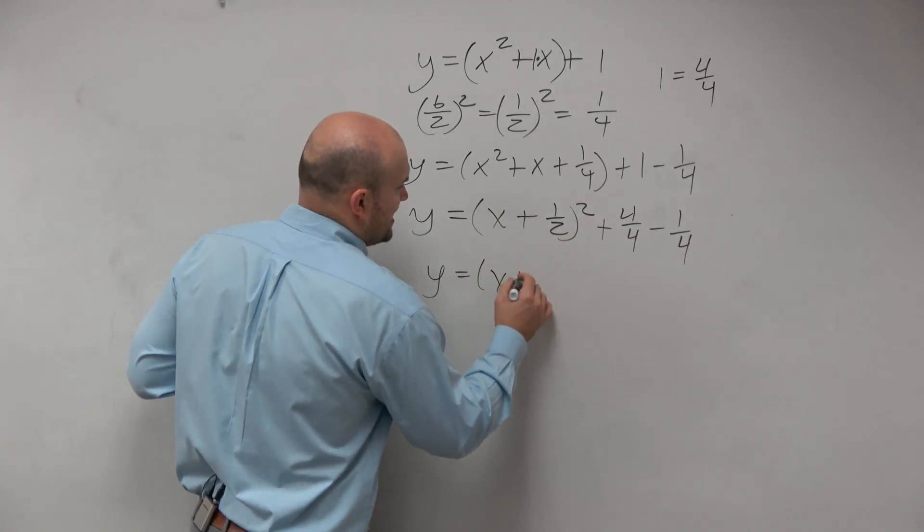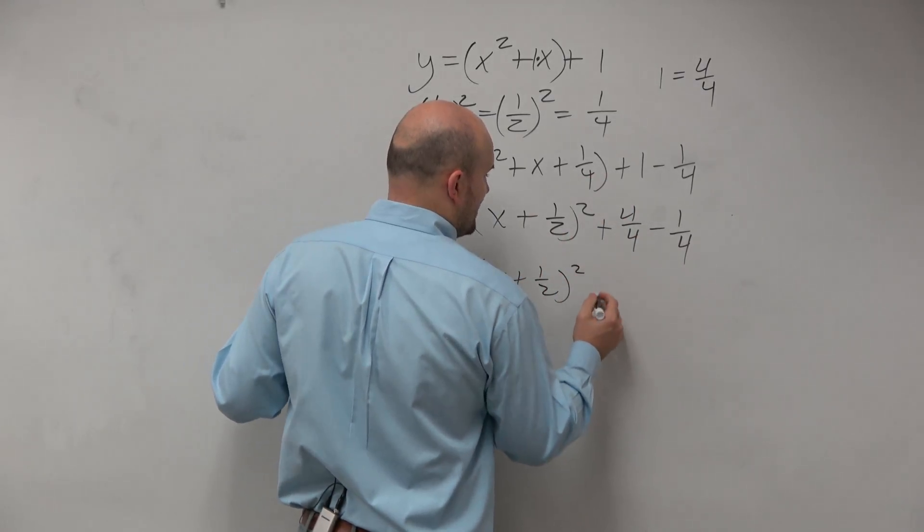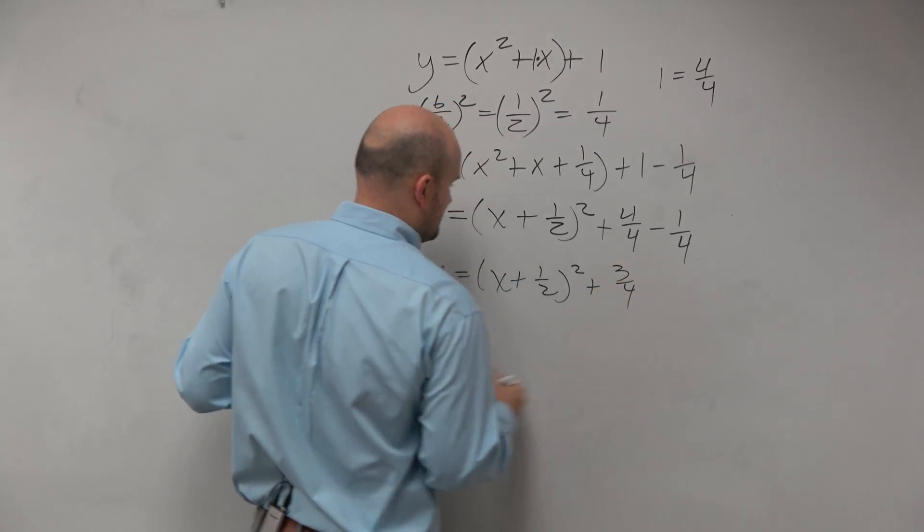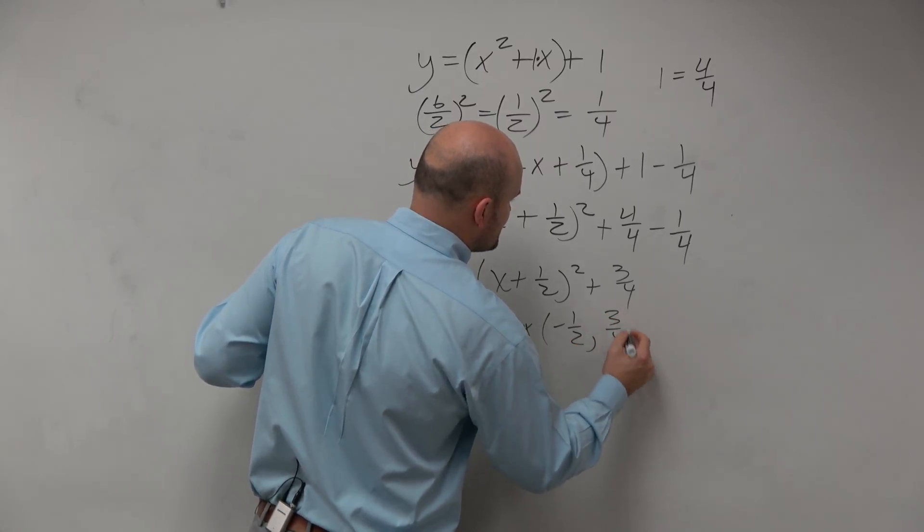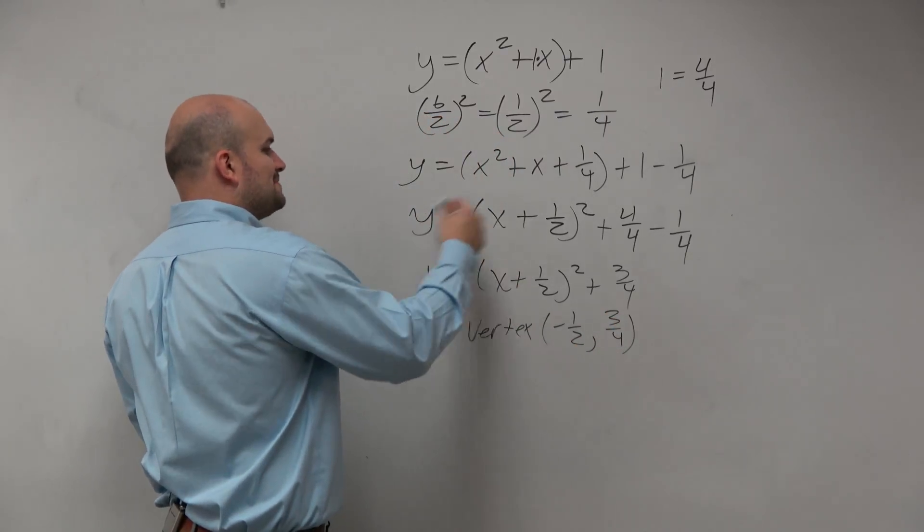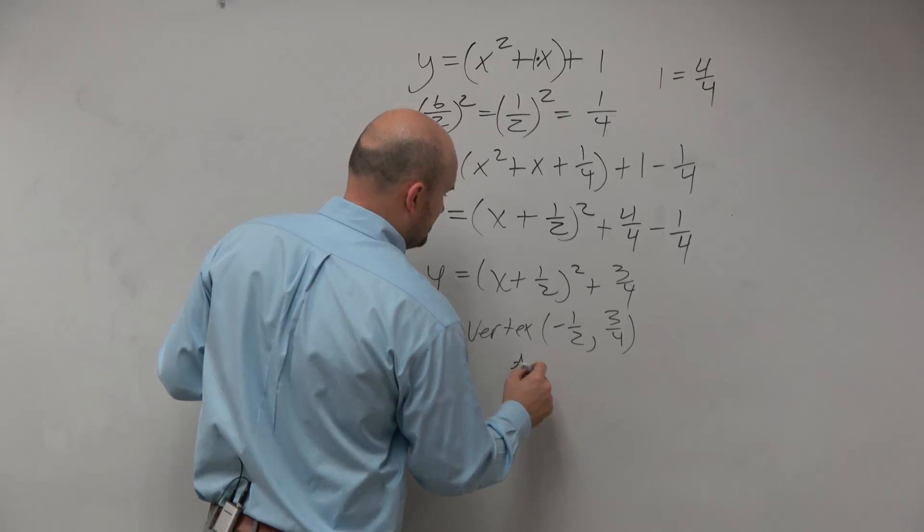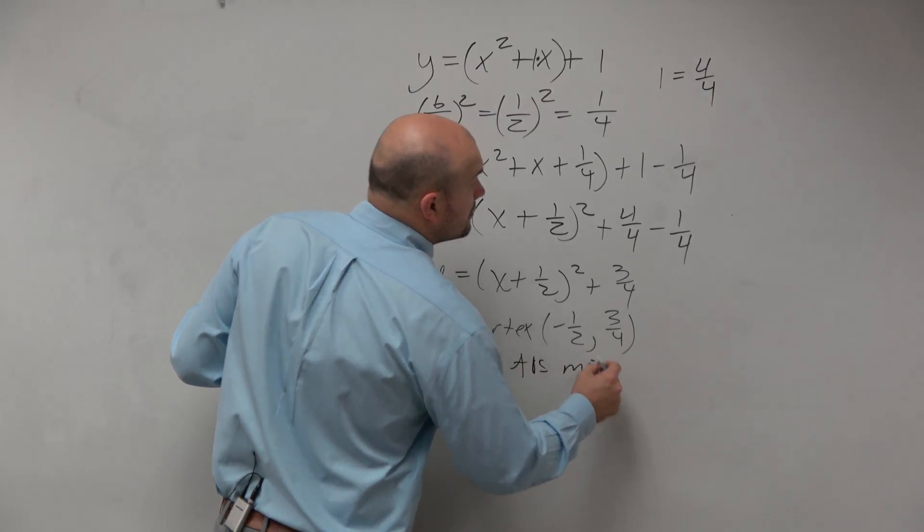So my final answer, y equals x plus 1 half squared plus 3 fourths. Vertex, negative 1 half, comma 3 fourths. And that is an absolute min. Good.